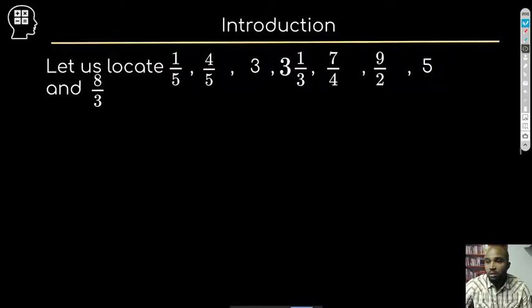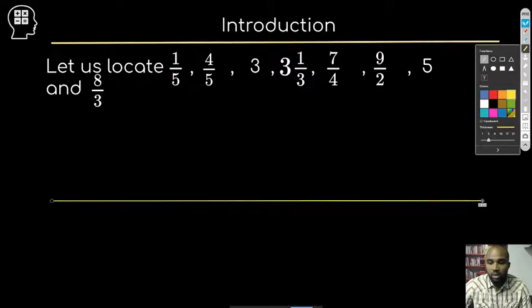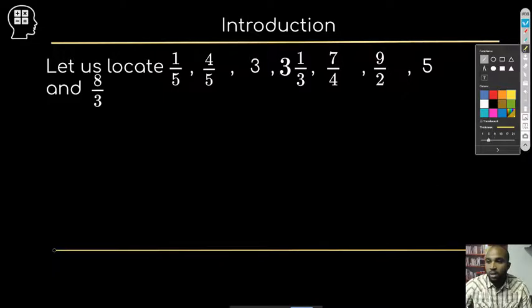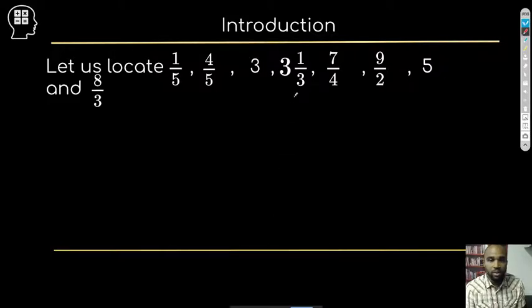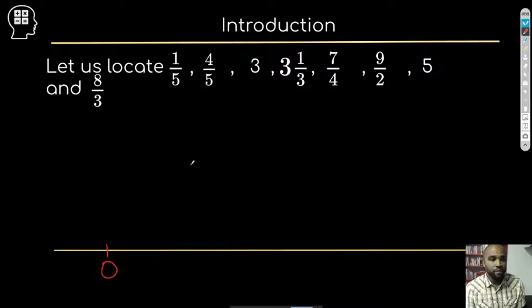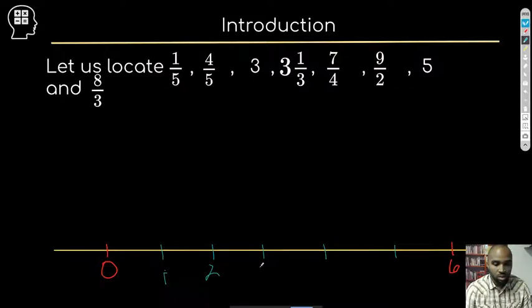So let me draw a number line. We're dealing with all positive numbers, so I don't have to put a zero in the middle. I'll put zero about right here. It looks like it goes up as high as five, so we'll put six here just to be sure. Now I want to start to identify the values — zero, one, two, three, four, five, and six.